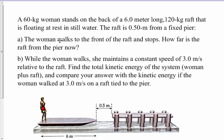The woman is going to walk to the front of this raft and stop. We want to calculate how far the raft is from the pier once she moves forward. And while the woman walks, she maintains a constant speed of 3 meters per second relative to the raft. We want to find the total kinetic energy of the system — the woman plus the raft — and compare our answer with the kinetic energy if the woman walked 3 meters per second on a raft tied to the pier.